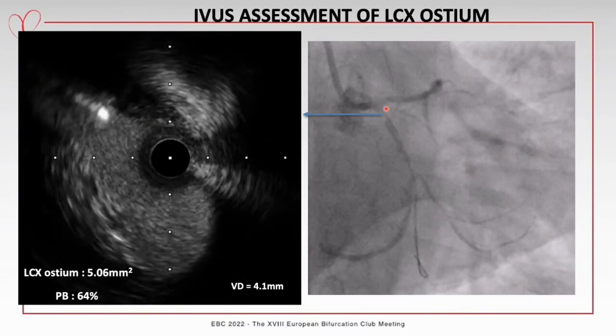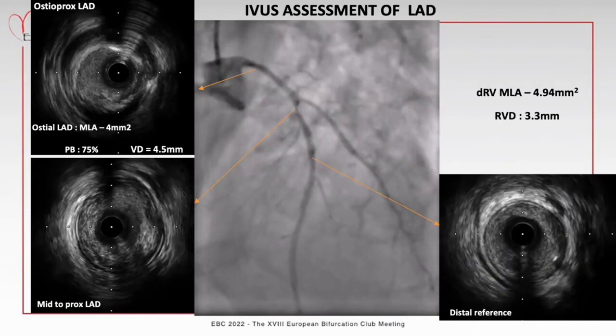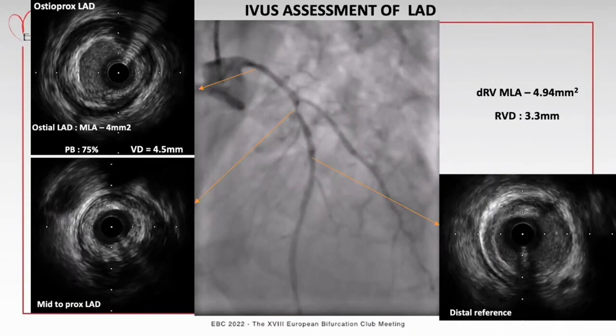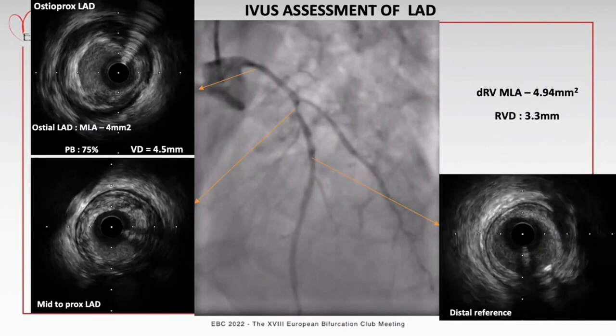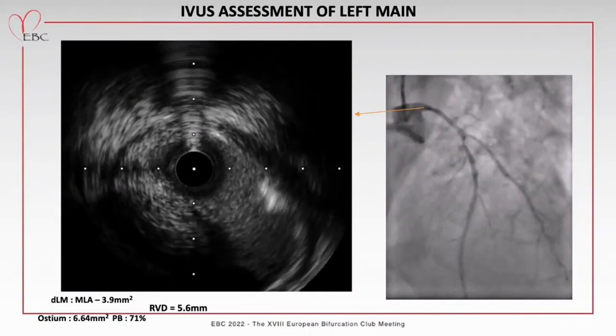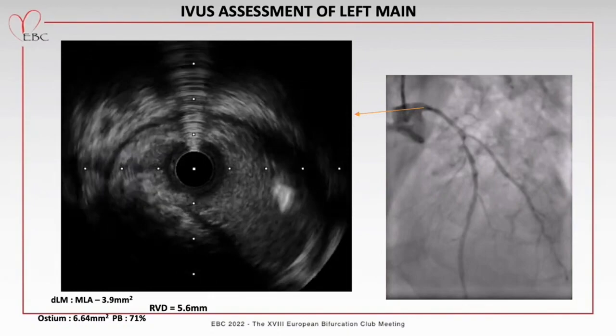The IVUS pullback further showed plaque extending proximally with fibro-atheromatous plaque with luminal thrombus at the occlusion site; ostial plaque burden was 64% and vessel diameter was 4.1mm. IVUS pullback from the distal LAD showed reference vessel diameter of 3.3mm, mixed plaque with high attenuation at the diagonal origin, and at the LAD ostium an MLA of 4mm² with plaque burden of 75%. In the distal left main there was high attenuation plaque from 5 to 9 o'clock; lumen area was 3.9mm² with vessel diameter of 5.6mm.